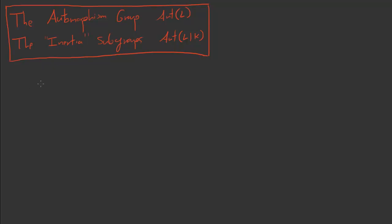Remember last time we defined field automorphisms in general. Now we're going to start using that definition right away. We're going to fix some field L, and then look at all of its automorphisms. We'll put them together into one set called the automorphism set of L — or more precisely, the automorphism group of L — which we'll denote Aut(L).